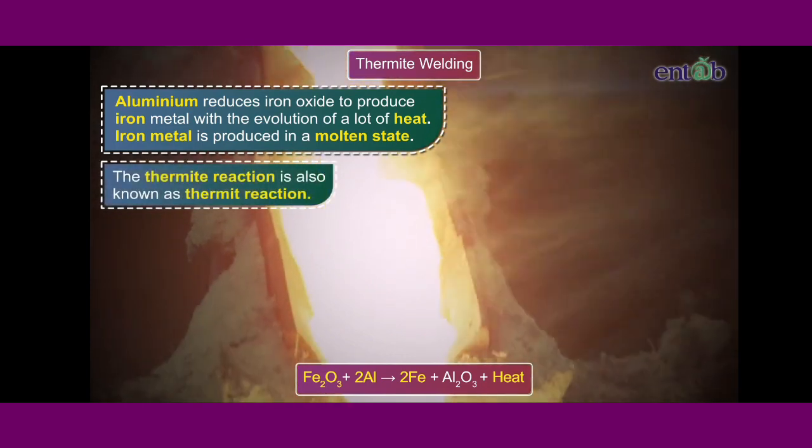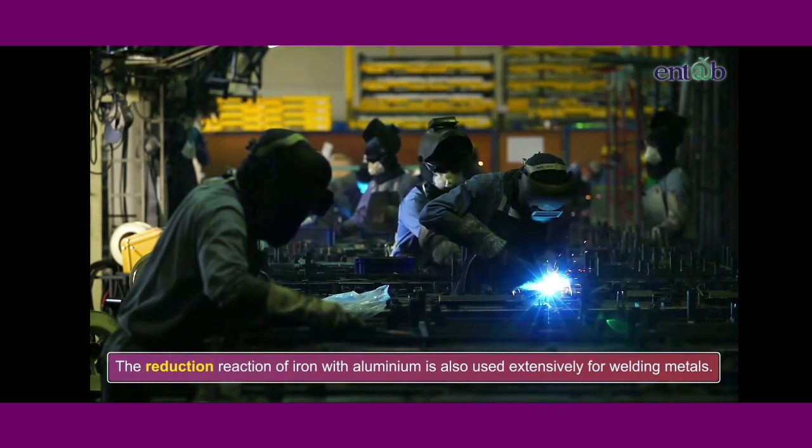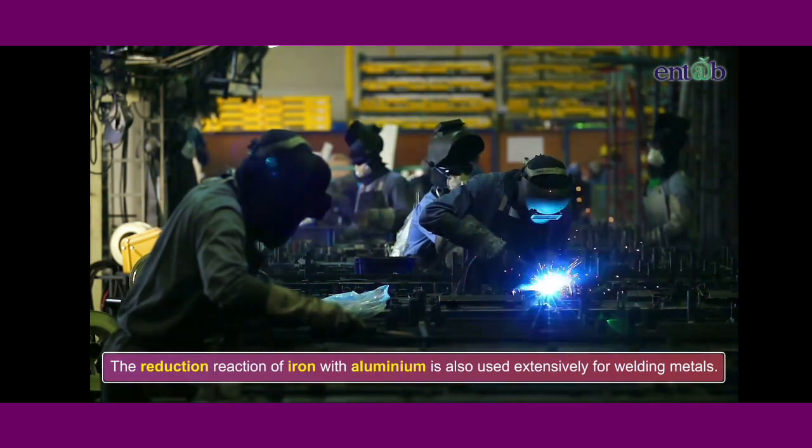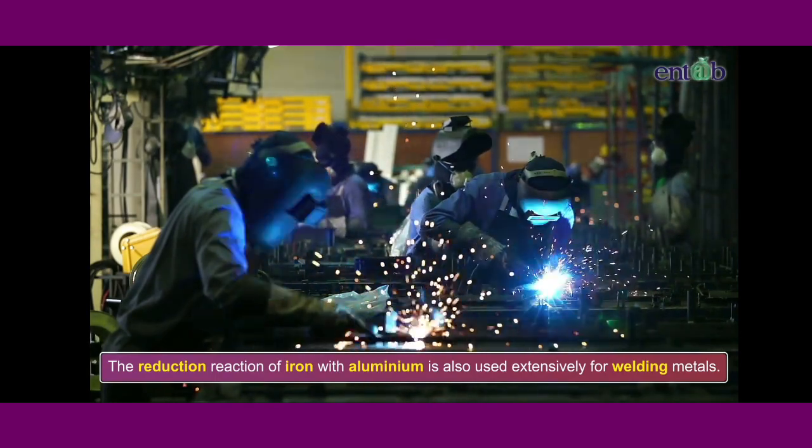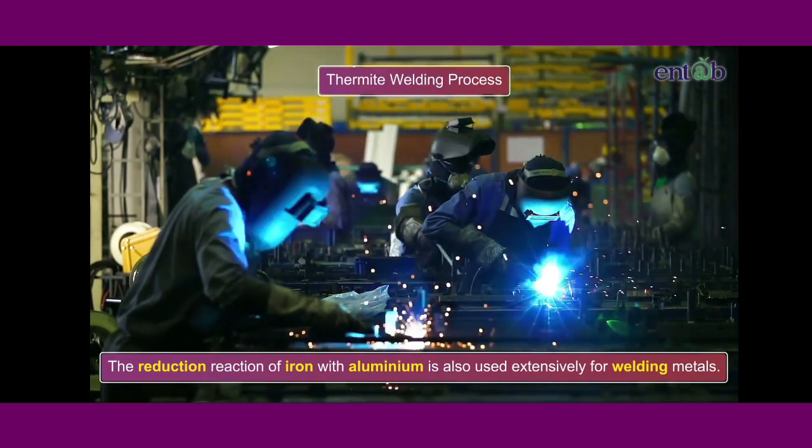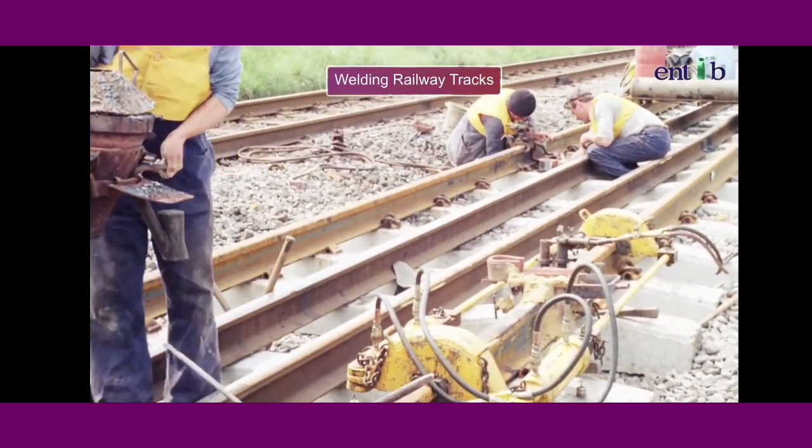This reaction of reduction of a metal oxide with aluminium to form metal is called the thermite process or the thermite reaction. The reduction reaction of iron with aluminium is also used extensively for welding metals and is then termed as the thermite welding process. It is largely used for welding railway tracks.